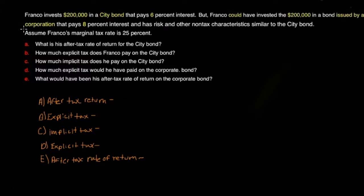The highlighted items are very important. The first investment was in a city bond — and if you remember anything about municipal bonds, they're not taxed as a tax incentive — and it pays six percent interest. Franco could have instead invested the $200,000 in a corporate bond that pays eight percent interest, which at first glance seems more attractive. We'll find out which one yields the greater return.